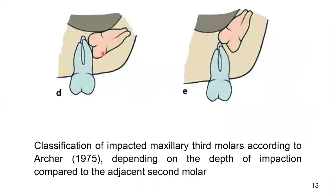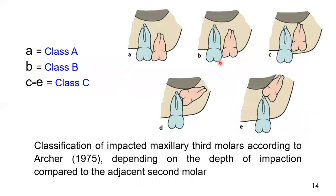These are touching the roots and are even deeper than diagram D, so these are also classified as Class C. In summary: picture one is Class A, this is Class B, and pictures C, D, and E are Class C.